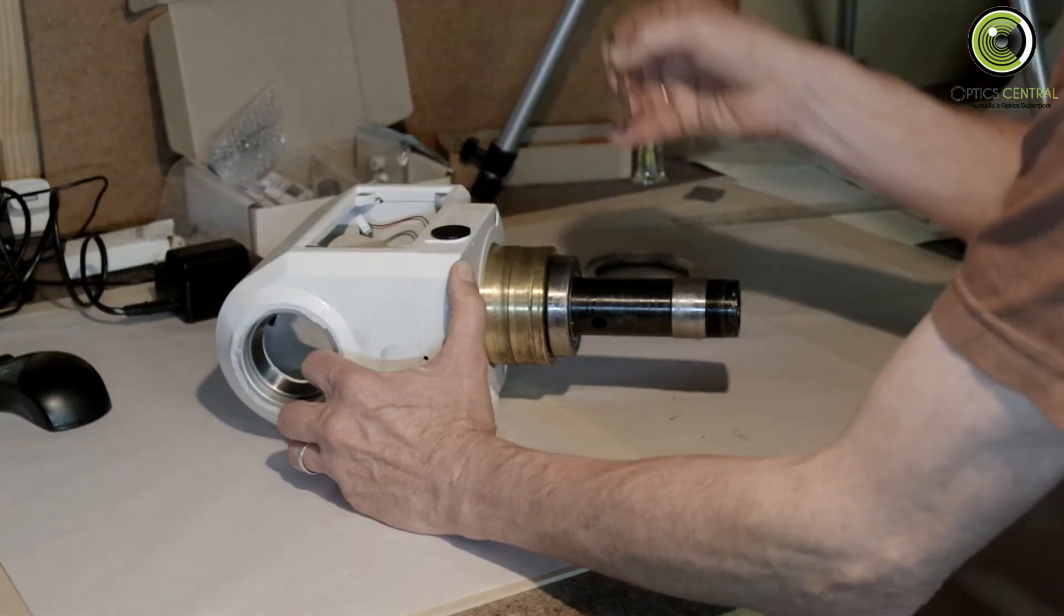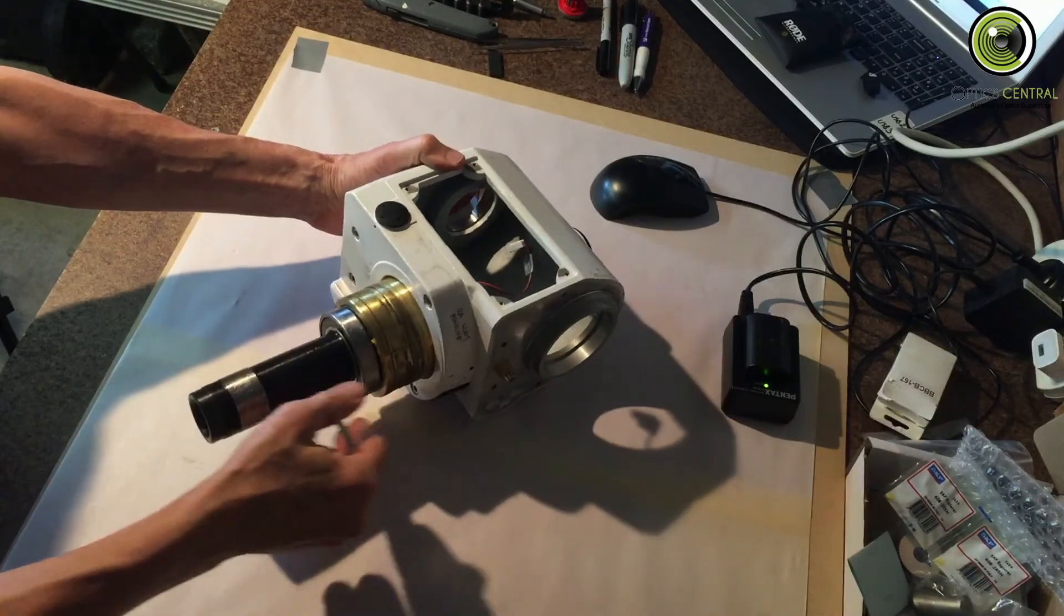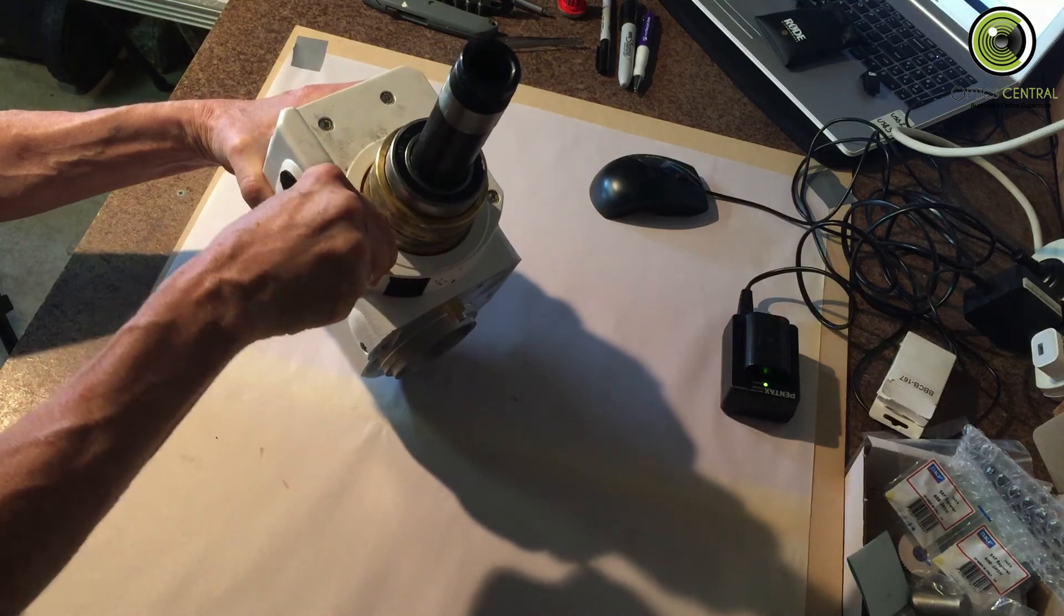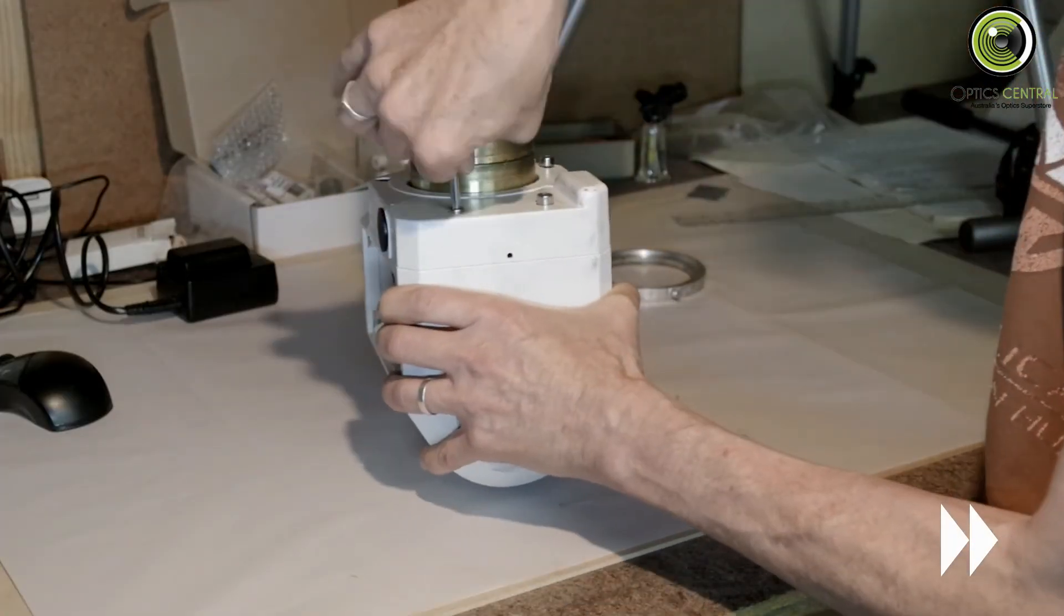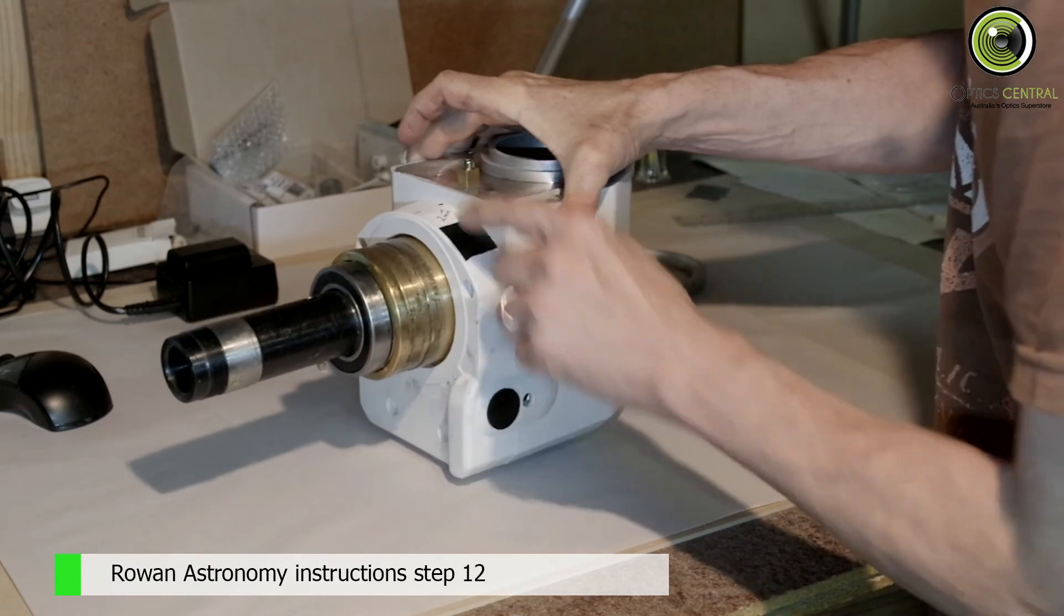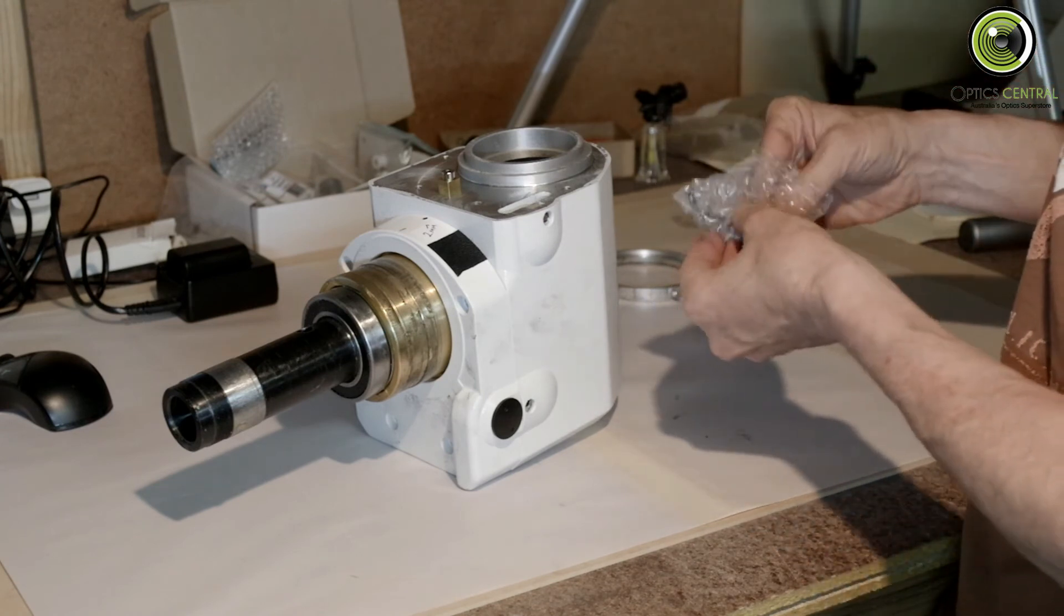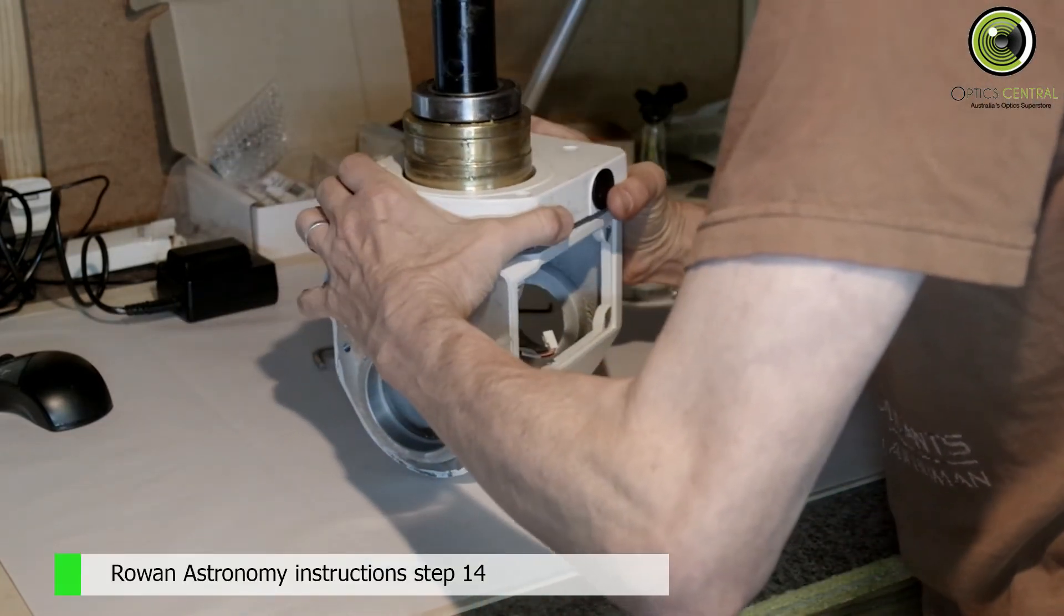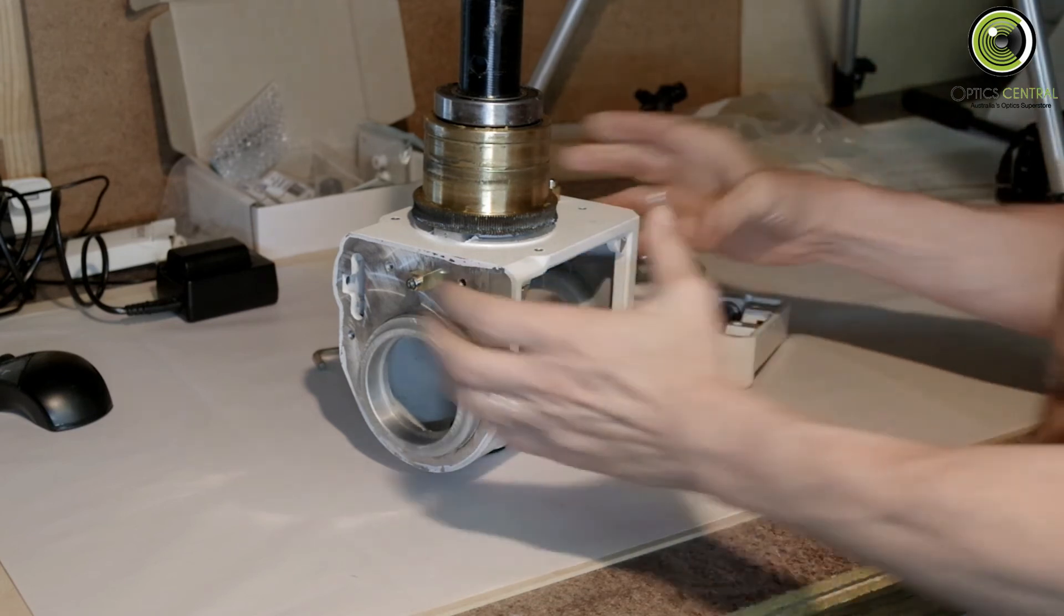I think this is a five millimeter Allen key, and that will do these four screws here, which hold the housing on. Now, the grub screw, according to my note, there is a two millimeter one. I've got the two millimeter grub screw in the little packet that we got from Rowan Astronomy. In fact, it's come off. Heavy sigh of relief.